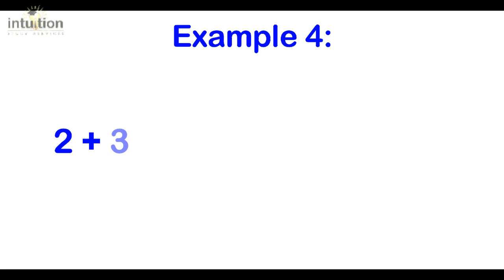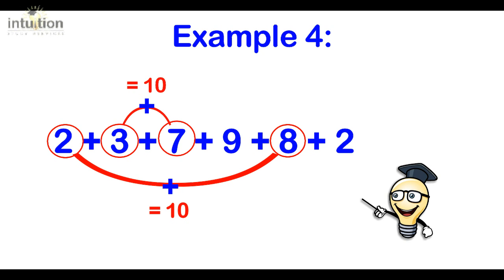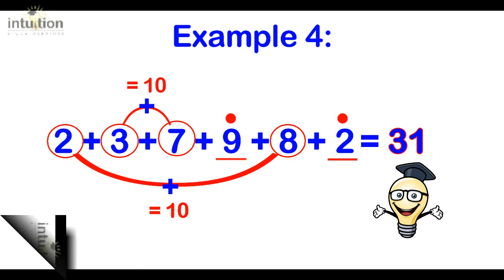So we've got 2 plus 3 plus 7 plus 9 plus 8 plus 2. Let's start by grouping all the complements to 10. We've got 2 and 8, that's 1. We've got 3 and 7, that's 2. So there's two complements there. That's 20 and then adding the 9 is 29. Adding the 2 makes 31.